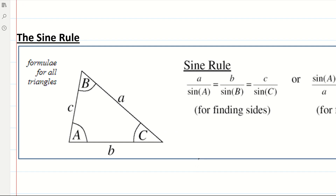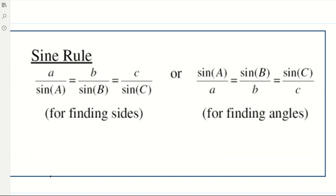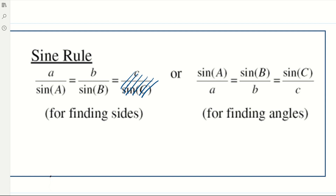The sine rule for finding sides is: a over sine A equals b over sine B equals c over sine C. These ratios, if you put them in, will all have the same numerical values. When you come to use the sine rule, you will only need to use two — you never need to use three. For finding angles, it is a bit easier to put the angle part, sine A over a, in the numerator. You can still rearrange and get the same answer, but it just makes it a little bit easier to put the angle part on top. And again, you would only ever use one of them.